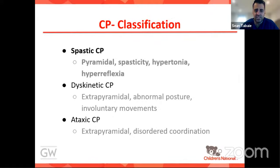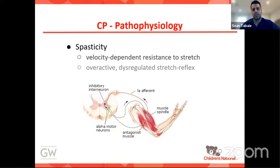CP is classified by type: spastic CP is the most common — children with increased spasticity and hypertonia — followed by dyskinetic CP and ataxic CP. Spasticity is the bane of orthopedic surgeons' existence: not only does it cause the orthopedic issues, it also affects the success of orthopedic interventions. Spasticity is defined as a velocity-dependent resistance to stretch, often resulting in an overactive, dysregulated stretch reflex in these children.